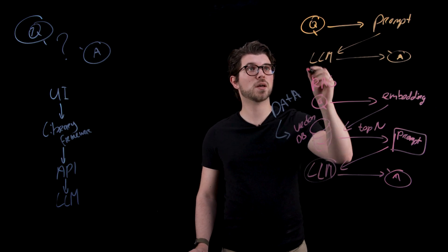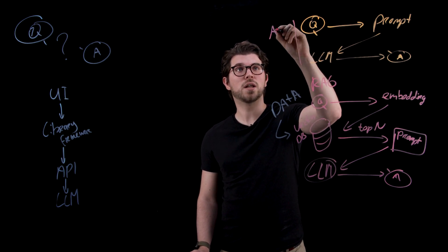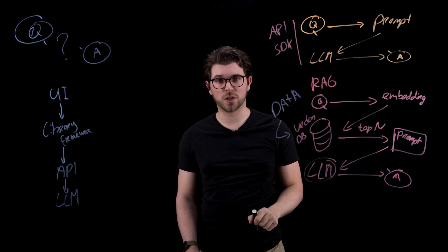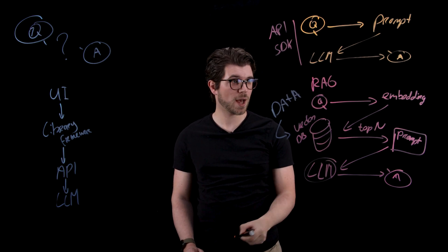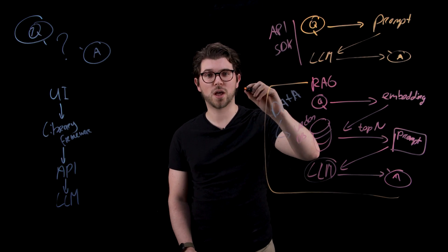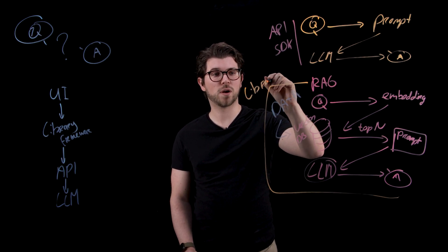If we look at basic prompting, this is typically done via an API or an SDK which could be provided by the LLM provider. If we look at RAG or retrieval augmented generation, you typically do this via a library or a framework.